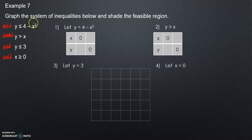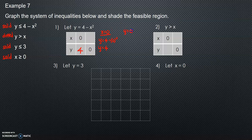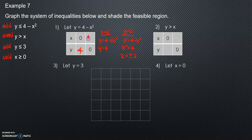We change the inequalities to equations. Let x equal 0: y equals 4 minus 0 squared, so y equals 4. When y equals 0: 0 equals 4 minus x squared, so x squared equals 4, and x equals plus or minus 2. That means we have two values: positive 2 and negative 2.